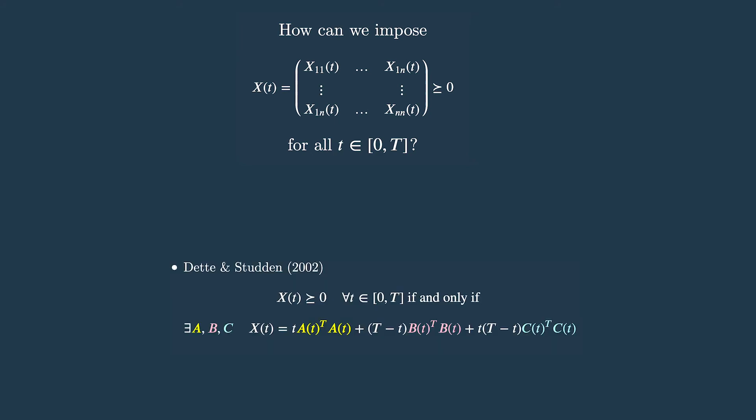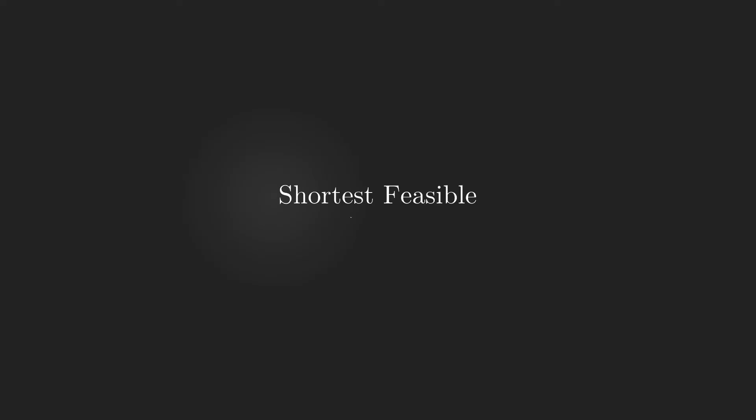In order to deal with this additional complication, we call upon a result from algebraic geometry. Now, I won't go into the details of this theorem, but what it is actually saying is that we can turn a time-variant semi-definite program into a vanilla semi-definite program that we know how to solve.